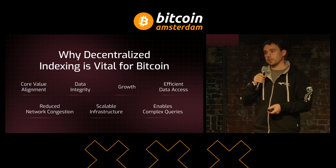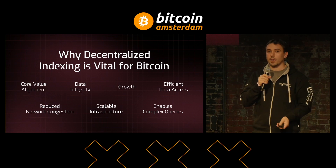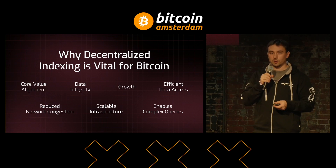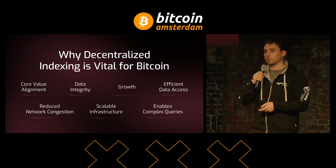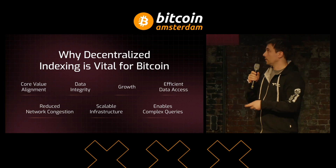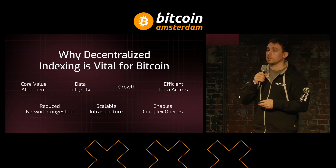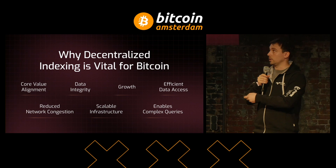It doesn't seem super interesting like this, but imagine that you want to plug an AI onto Bitcoin in order to get Bitcoin data from the UTXOs. You're never going to be able to do that with a centralized indexer — it's just going to be a clusterfuck. But if you're doing it with a decentralized indexer, then you can just run it through each node separately.